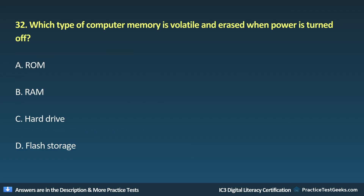Question 32: Which type of computer memory is volatile and erased when power is turned off? A. ROM. B. RAM. C. Hard drive. D. Flash storage.